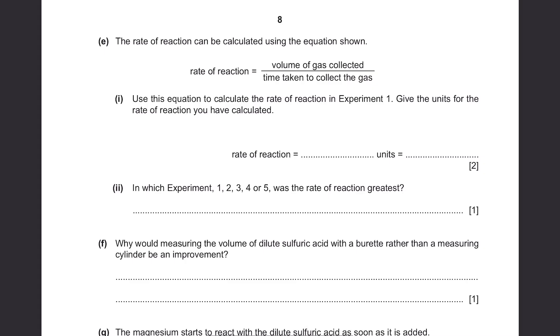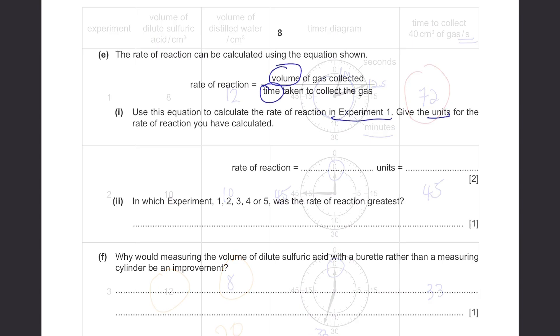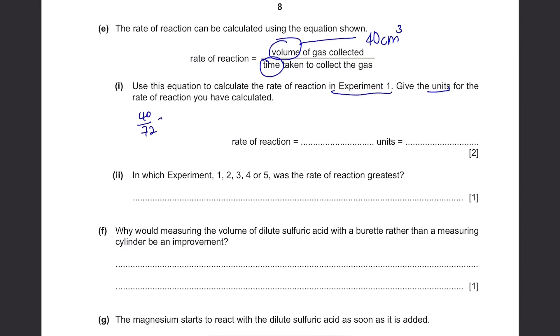Part E. The rate of reaction can be calculated using the equation shown. Rate of reaction equals volume of gas divided by time taken. Use this equation to calculate the rate of reaction in experiment 1. Give the units for the rate of reaction you have calculated. While the volume of gas collected is always the same, they said it's 40 cm cubed. Then the time taken for experiment 1 is 72. So 40 divided by 72. It's 0.56 correct to 2 significant figures. And the unit. Well, for volume, it's cm cubed. For time, it's seconds. So it's cm cubed per second.